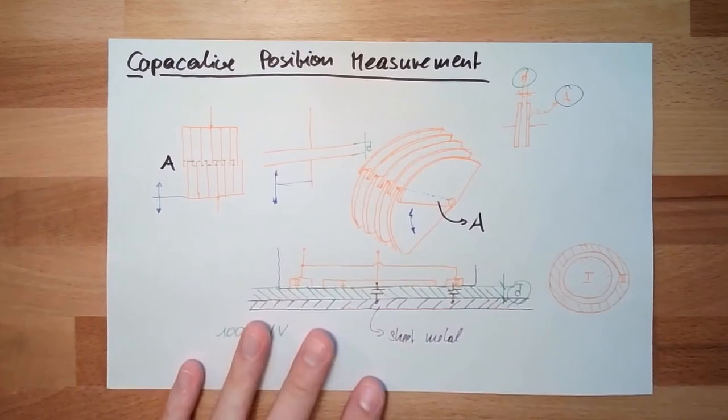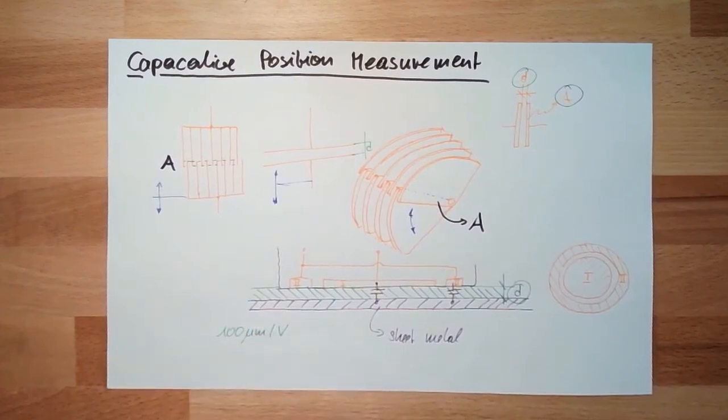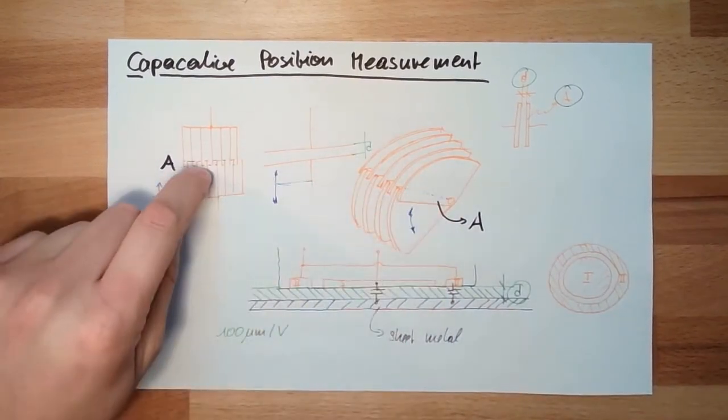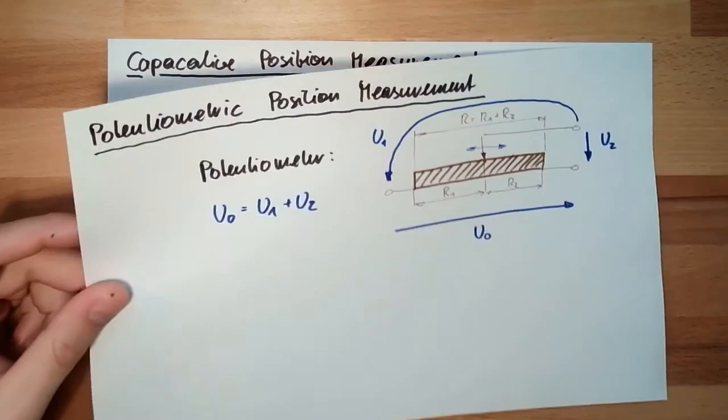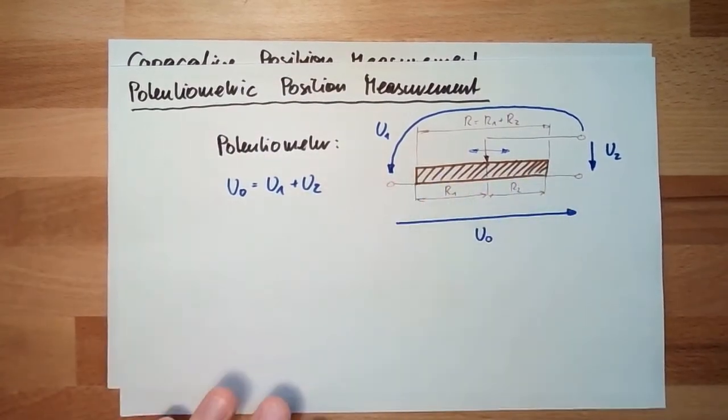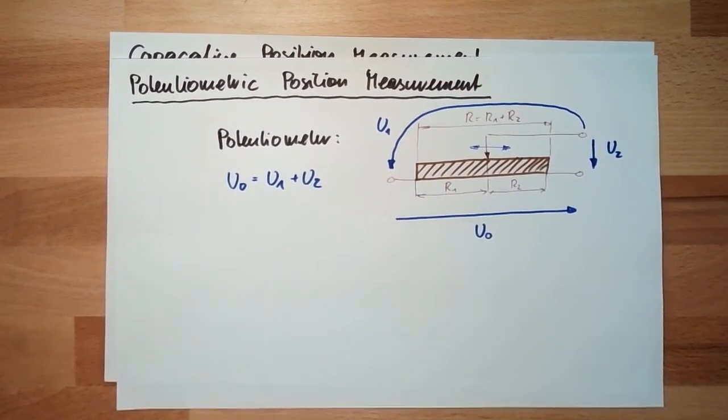It's not that complicated as it looks because last time we already talked about this capacitive method. There is a rotary measurement, there is a linear measurement. Before we also talked about symmetric measurement. There is a linear measurement possible, and of course we also had this rotary measurement.